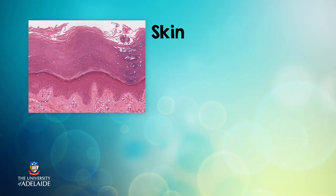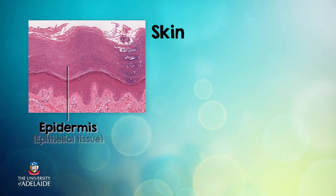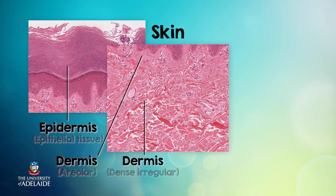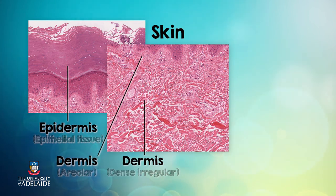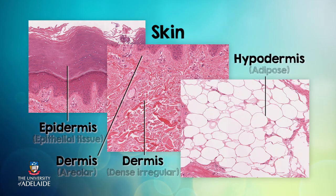The outer layer is the epidermis, made up of epithelial tissue. The middle layer, the dermis, is made up of a layer of areolar tissue and a layer of dense irregular connective tissue. The deeper layer, the hypodermis, is made up of adipose tissue.